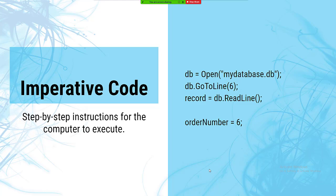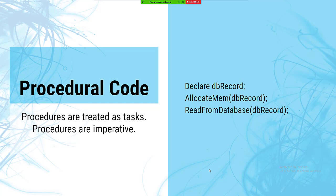LINQ allows us to do more declarative approaches to computation and transformation of our data. Procedural code is imperative code, and this is what we write in C# from version 1 through when LINQ was introduced. If you're not using LINQ, you're still using procedural code — it may be object-oriented, but it is imperative procedural code.